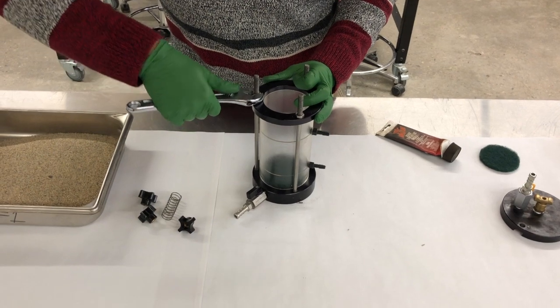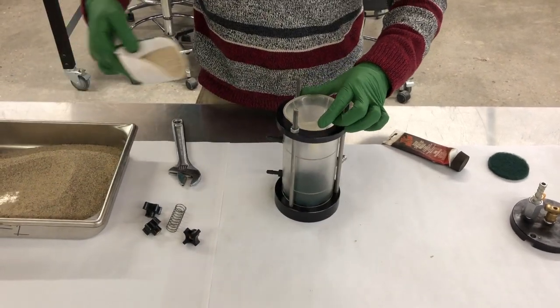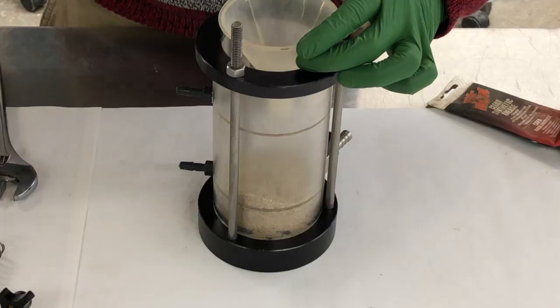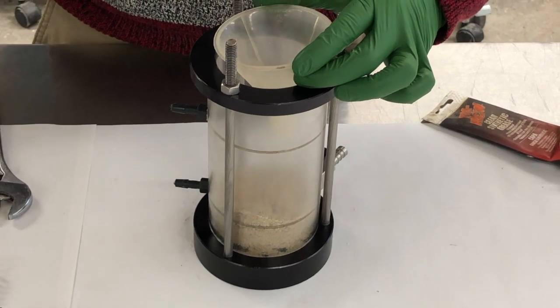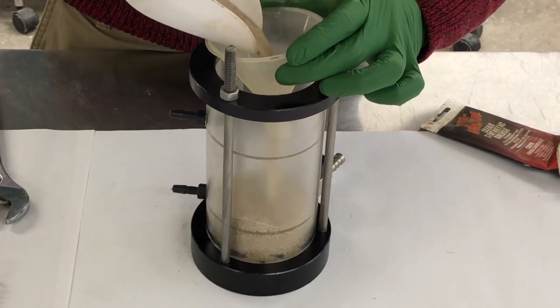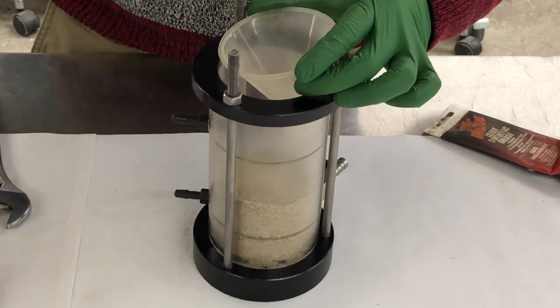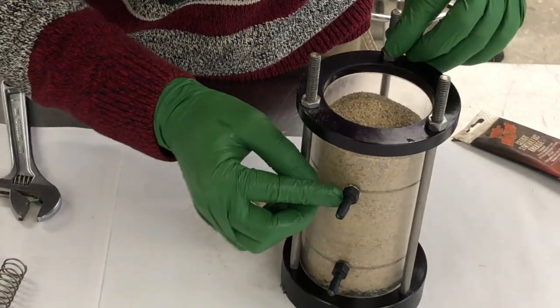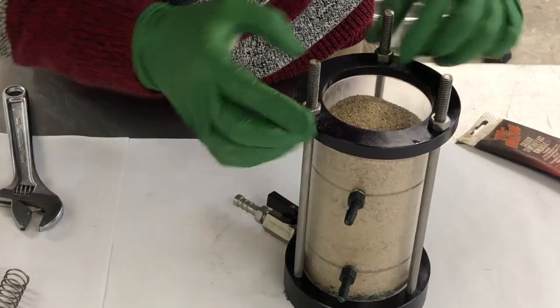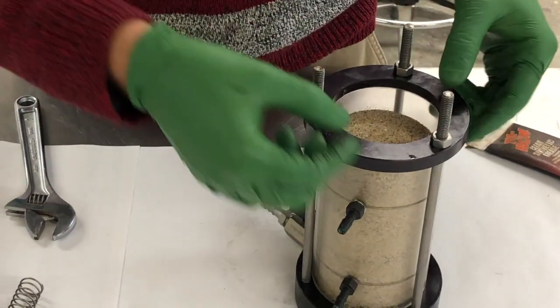After assembling, begin to fill the cell with soil uniformly. The soil height needs to be higher than the two ports on the side but cannot be at the top of the cell.